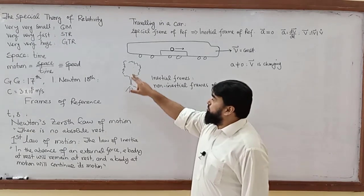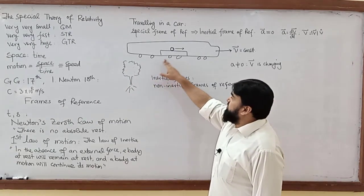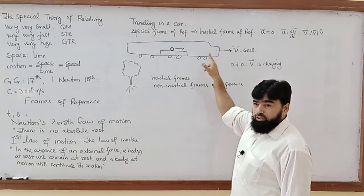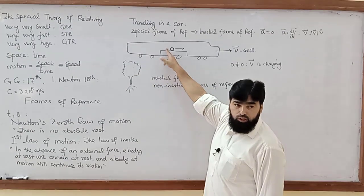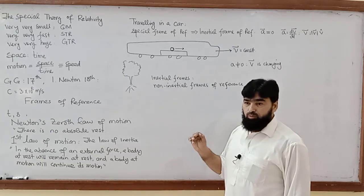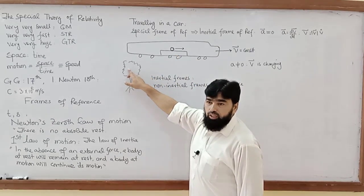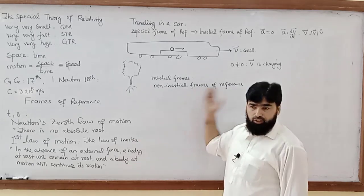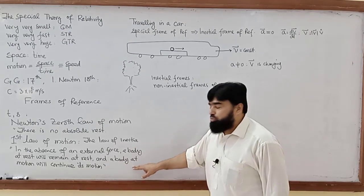Now look at the same situation from the reference frame of the tree. The tree sees that the train is moving, but now the train is applying braking and deceleration is produced. This observer sees that earlier the ball had constant motion, but now it appears as though someone has pushed it — an external agency — even though there is no external force on the ball. This observer also sees the law of inertia violated: the ball speeds up with no force applied.